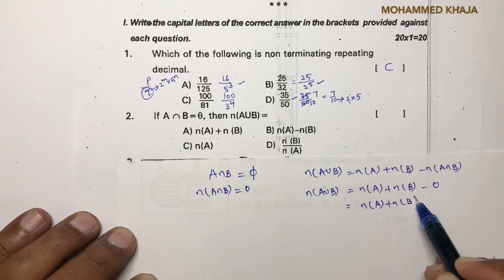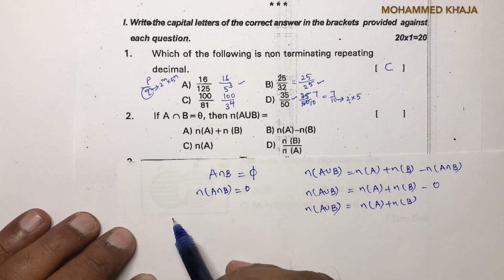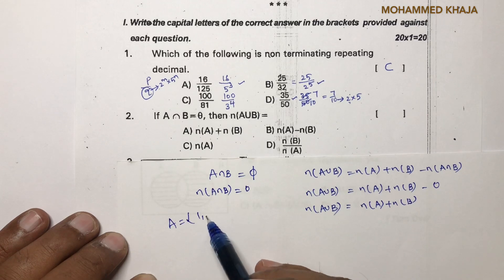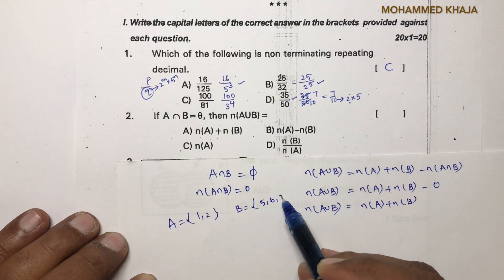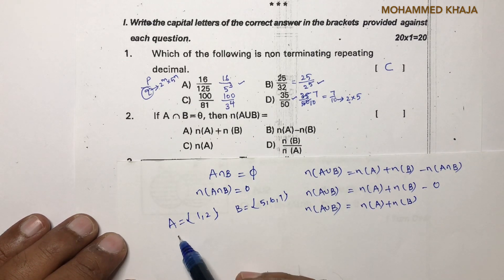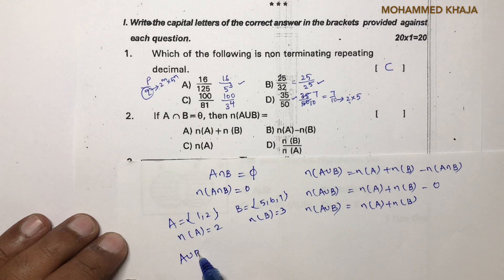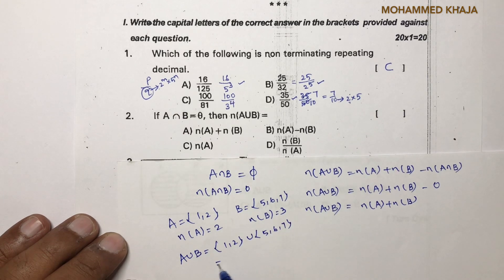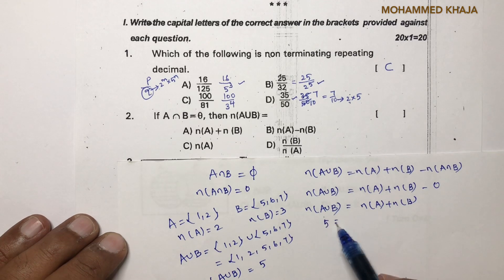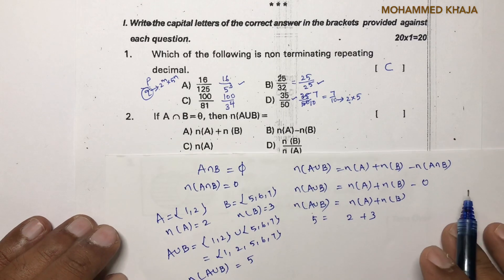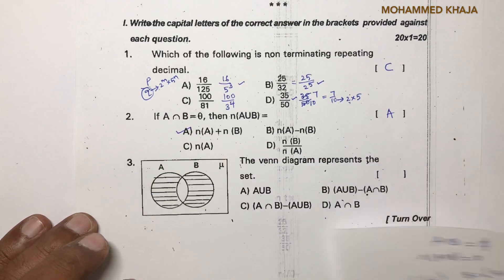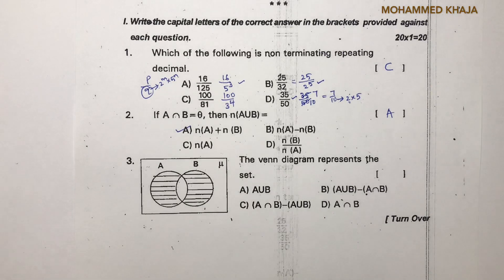To further explain: if A = {1, 2} and B = {5, 6, 7}, these are disjoint sets with nothing in common. N(A) = 2, N(B) = 3. A∪B = {1, 2, 5, 6, 7}, so N(A∪B) = 5, which equals N(A) + N(B) = 2 + 3 = 5. Correct option is A.